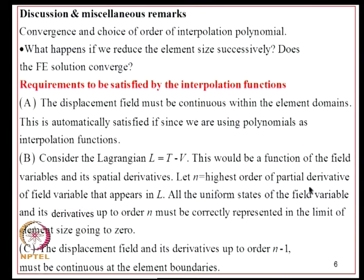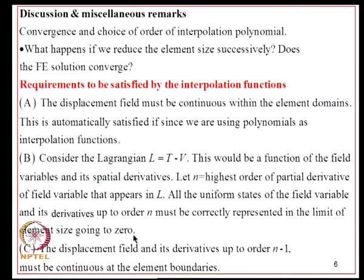If N is the highest order of partial derivative of the field variable appearing in the Lagrangian, then all uniform states of the field variable and its derivatives up to order N must be correctly represented in the limit of element size going to zero. The next condition is that the displacement field and its derivatives up to order N-1 must be continuous at element boundaries.